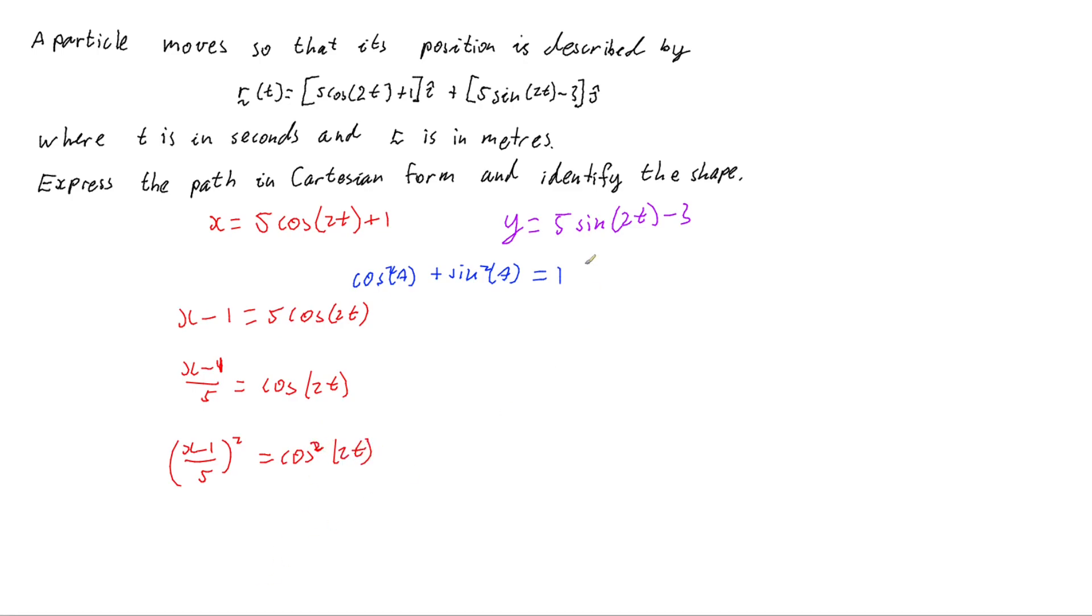Do the same for our y equation, we can have y plus 3 equals 5 sine of 2t. Divide both sides by 5 equals sine of 2t. And then square both sides. And so we get y plus 3 on 5 all squared equals sine squared of 2t.